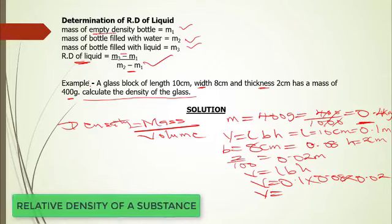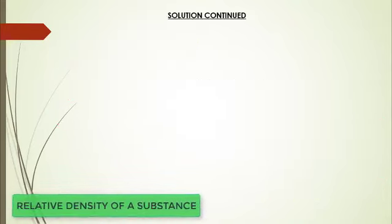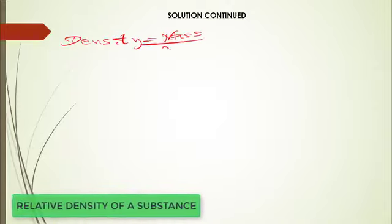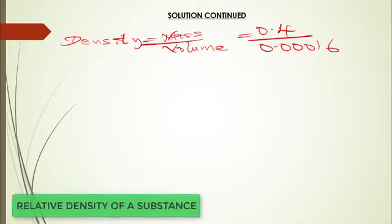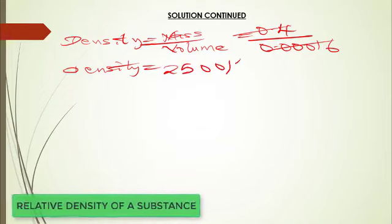The volume works out to 0.000160 meter cube. Using the formula density equals mass divided by volume, with mass of 0.4 kg and volume of 0.00016 m³, the density equals 2500 kilograms per meter cube.